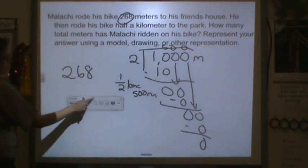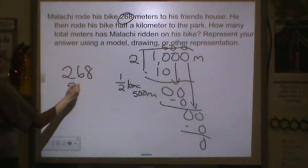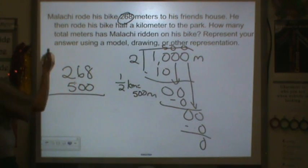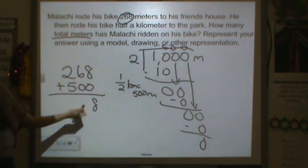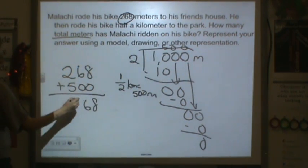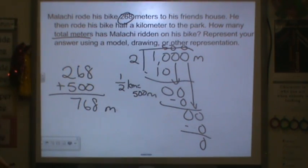He then rode his bike half a kilometer to the park. How many total meters did he ride? So we're going to do 8 and 0, 6 and 0, 2 and 5. So we have 768 meters.